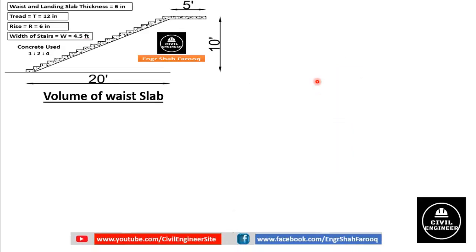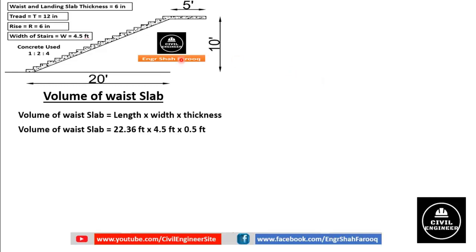First, we will calculate the volume of the waist slab. Volume of waist slab equals length multiplied by width multiplied by thickness. The length of the waist slab is 22.36 feet, width of the stairs is 4.5 feet, and thickness is 6 inches or 0.5 feet. After calculation, the volume of the waist slab is 50.31 cubic feet.